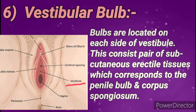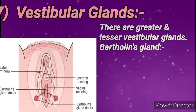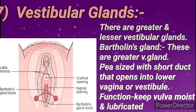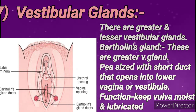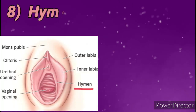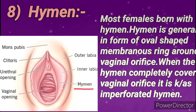Vestibular glands include greater and lesser vestibular glands. The Bartholin glands are the greater vestibular glands — these are pea-sized with a short duct which opens into the vestibule. Bartholin glands mainly provide moisture to the vulva and provide lubrication.